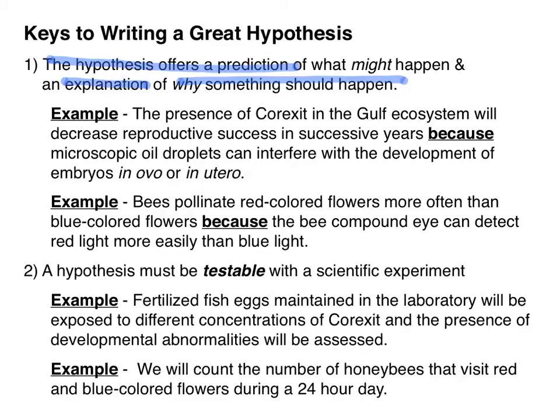Down below, I've included some examples of good scientific hypotheses. Let's see if we can find the prediction and the explanation in each one of them. So in the first one I've written: the presence of Corexit in the Gulf ecosystem will decrease reproductive success in successive years because microscopic oil droplets can interfere with the development of embryos in ovo or in utero. Can you find the prediction? Take a second and reread the hypothesis. Pause the video if you need to.